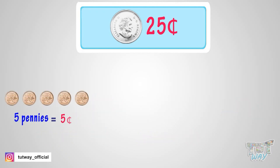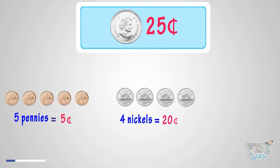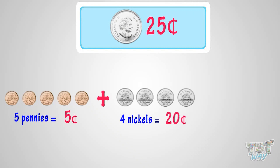Let's learn one more way: 5 pennies and 4 nickels. As 5 pennies make 5 cents, and 4 nickels make 20 cents, so in total we will have 25 cents. So we can exchange this set of coins too for a quarter.